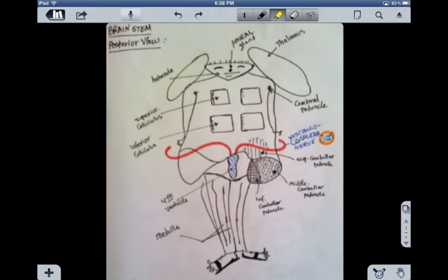So I'd like to mention the main figures here. We have the thalamus here, pineal gland at this region, and the stalk of it called habenula.